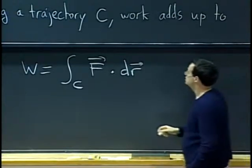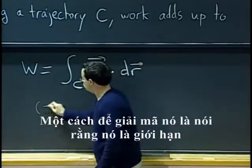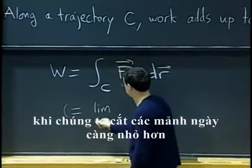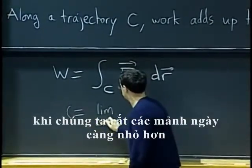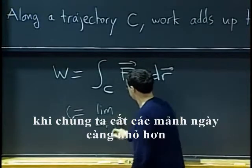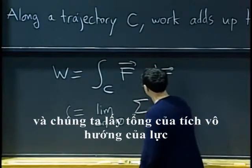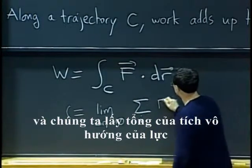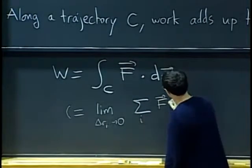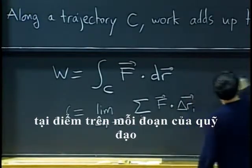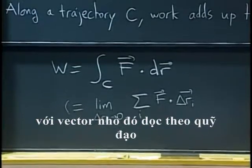So, one way to decode this is to say it's a limit as we cut into smaller and smaller pieces of the sum over each piece of the trajectory of the force at the given point dot product with that small vector along the trajectory.